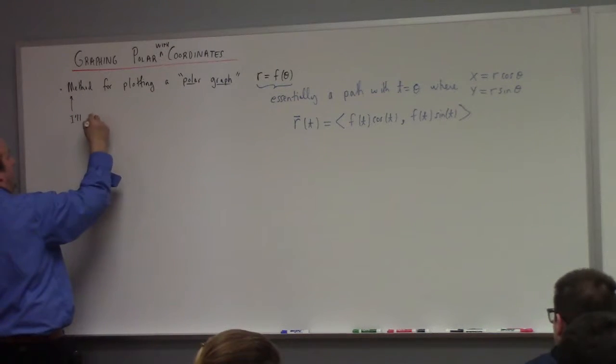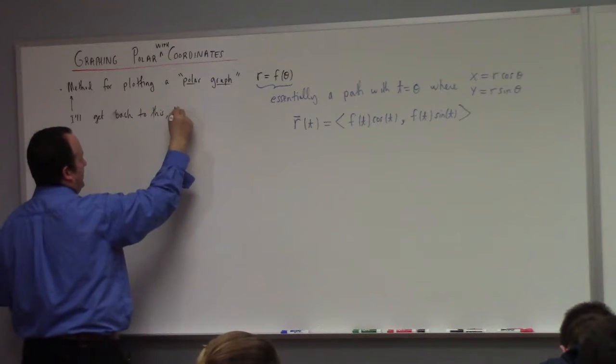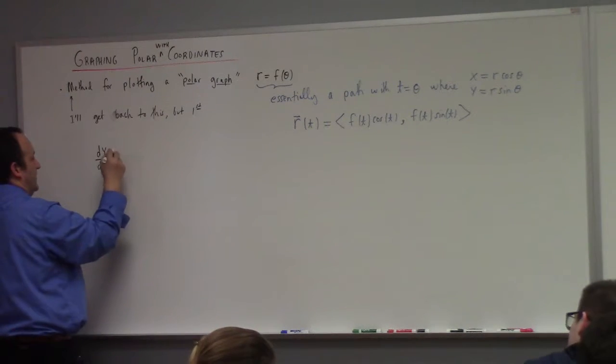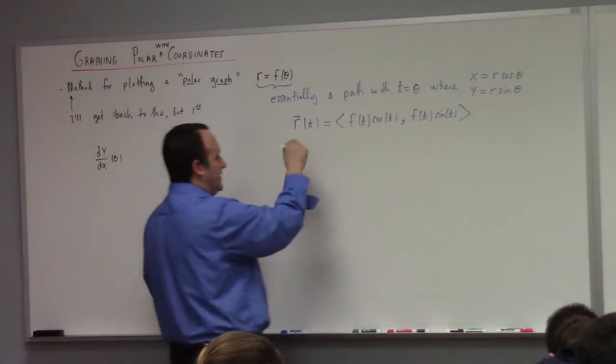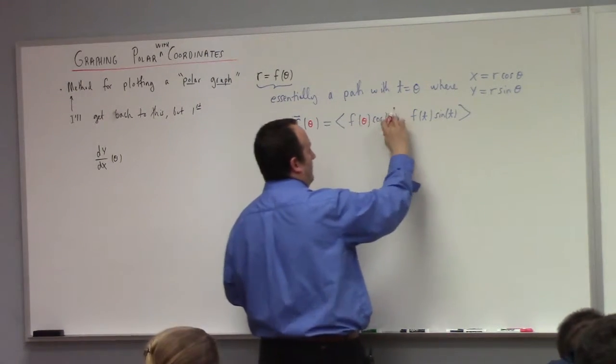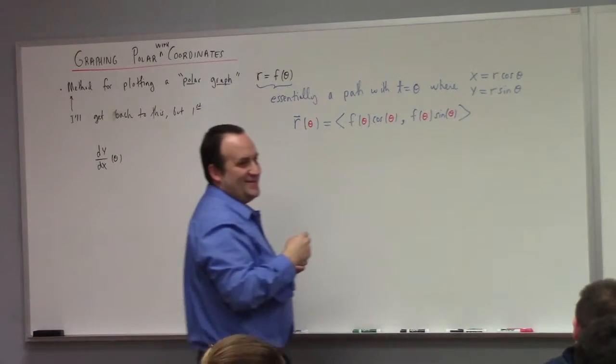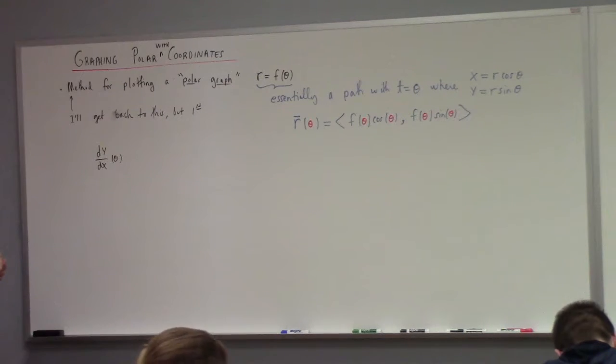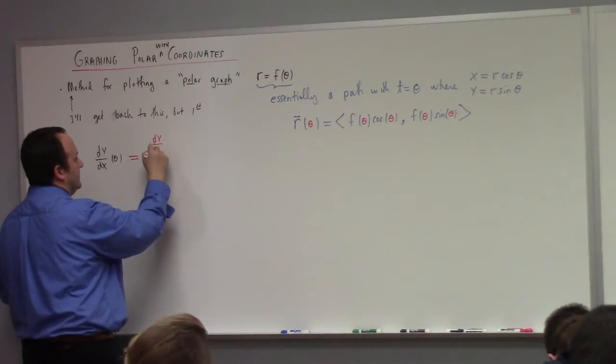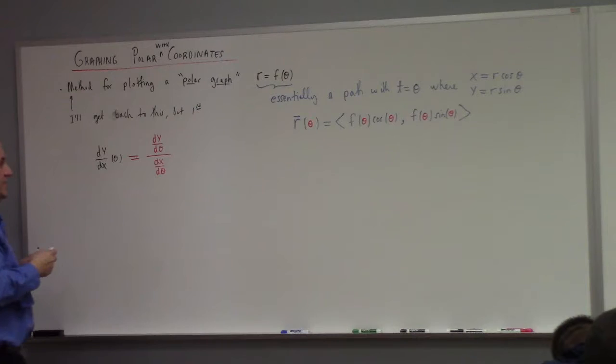So, I'll get back to this. But first, so what was the, how did we calculate the slope? If we want to calculate dy dx at theta? Because I could just erase t in here and put theta. This would be equal to what? This would be equal to dy d theta divided by dx d theta, as long as we're at such a point where that makes sense.